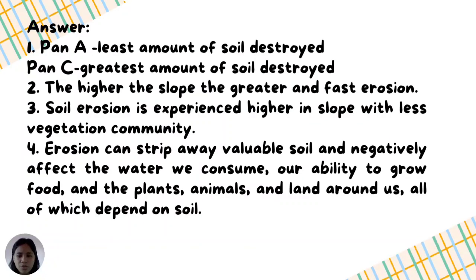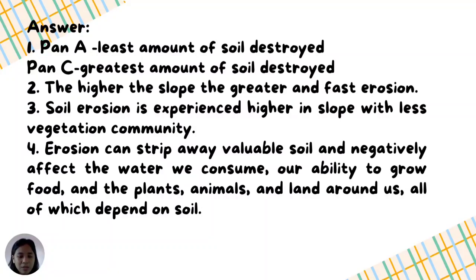Sample answers: Number 1 — Pan A had the least amount of soil displaced, while Pan C had the greatest. Number 2 — The higher the slope, the greater and faster the erosion. Number 3 — Soil erosion is experienced more in areas with steep slopes and less vegetation. Number 4 — Erosion can strip away valuable soil and negatively affect the water we consume, our ability to grow food, and the plants, animals, and land around us, all of which depend on soil.